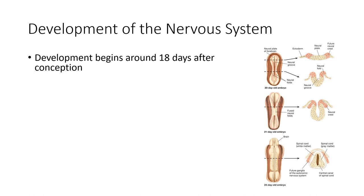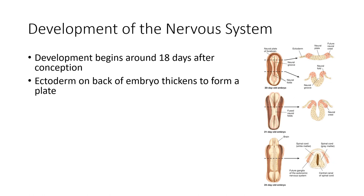Now we're going to take a look at the nervous system and its development — how the brain and spinal cord actually come to be. Here we're looking at development at a very early stage: 18 days after conception, development of the nervous system begins. We're looking at what is called the ectoderm on the back portion of an embryo. This is called the neural plate, which will eventually become the spinal cord and the brain.